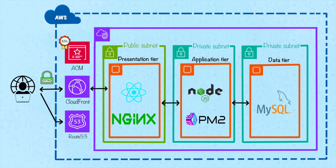CloudFront also offers enhanced security features like SSL/TLS termination and protection against DDoS attacks. AWS Certificate Manager is the cherry on top. It simplifies SSL certificate management by providing a centralized console and automating renewals. This means no more manual certificate installations or renewals on our EC2 instances, saving us time and reducing the risk of downtime. By combining CloudFront and AWS Certificate Manager, we're creating a more robust, secure, and efficient three-tier architecture that's ready to handle increased traffic.